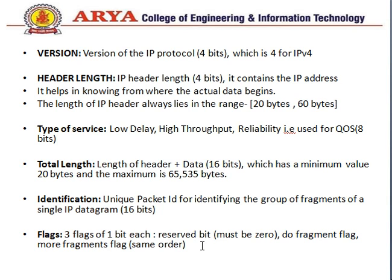Let's discuss these fields in detail. First, version — we are talking about IPv4, so the 4 at the end represents the version of the protocol. It is 4 bits and we write 4 here. Next is header length — the IP header length field is 4 bits. It helps in knowing from where the actual data begins, and it contains a range of 20 bytes to 60 bytes.